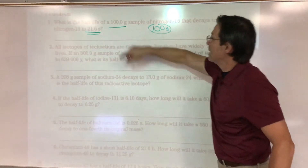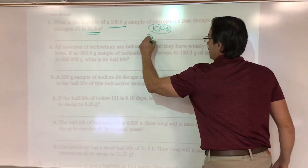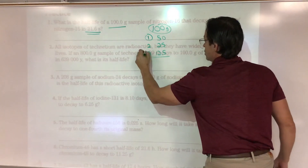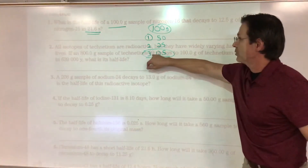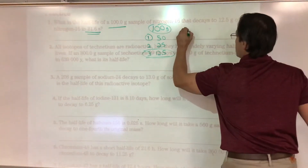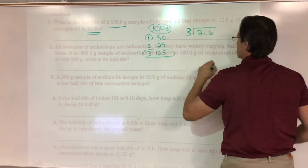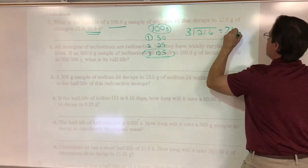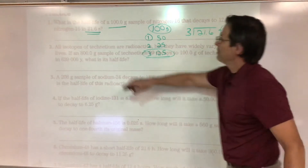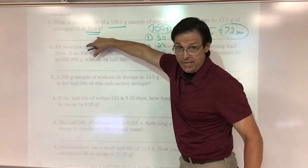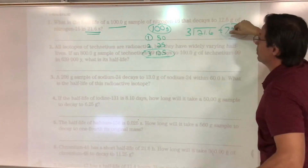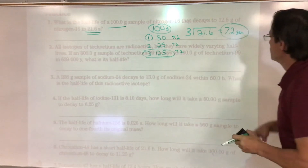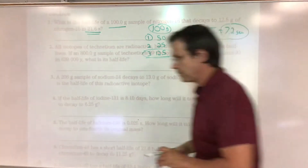One half-life would be 50 grams, two half-lives is 25, three half-lives is 12.5. So it went through three half-lives. I take three and divide it into 21.6 seconds — that comes out to 7.2 seconds. The half-life of nitrogen-16 is 7.2 seconds.